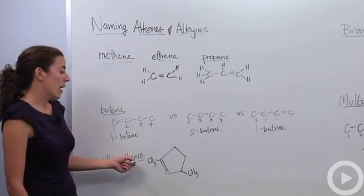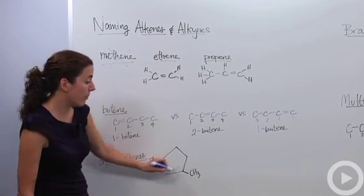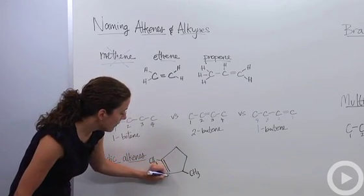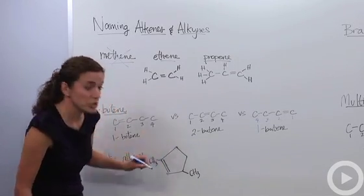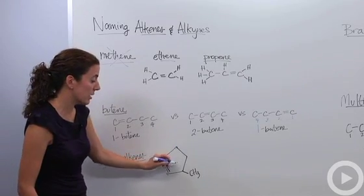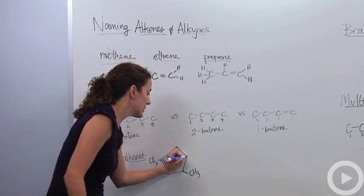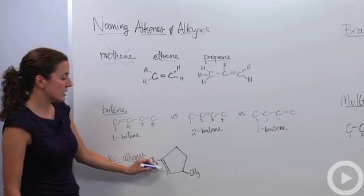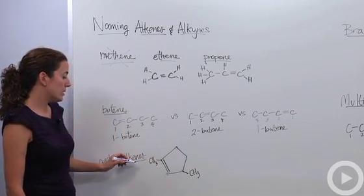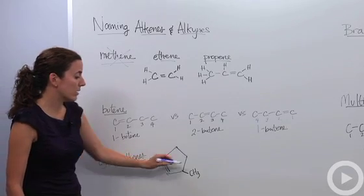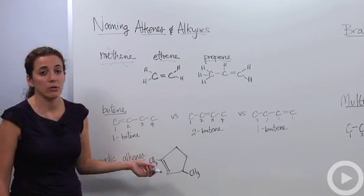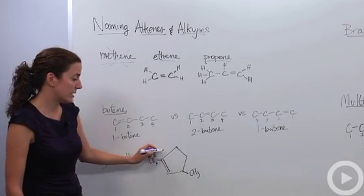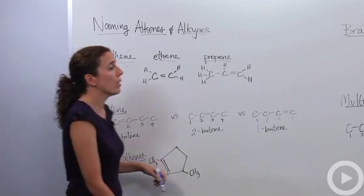What about cyclic alkenes — things that are in a ring, such as this one? We know this is pentene. Between each intersection there are carbons, and notice there's a double bond here, with methyl groups on either side. So we're going to call this a pentene ring: five carbons with a double bond between them.